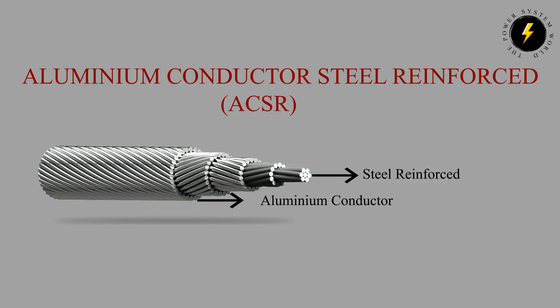As the efficiency of the transmission line is affected, stranded conductors are used to minimize the skin effect. In stranded conductors like ACSR, the current flows mostly in the outer layer made of aluminium, while the steel near the center carries no current and gives tensile strength to the conductor.